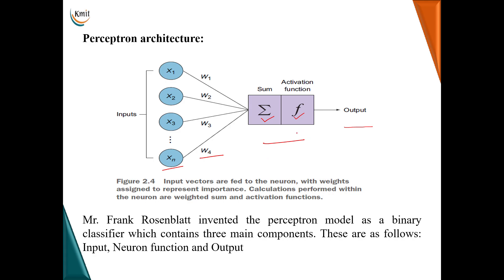There are different activation functions which we will discuss in the next sessions, but in today's session we will talk about the step activation function, whose output will be either 0 or 1. A scientist called Frank Rosenblatt invented this perceptron model, which is used for binary classification and contains three main components: input, neuron function, and output.